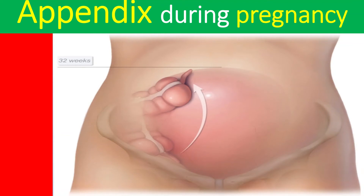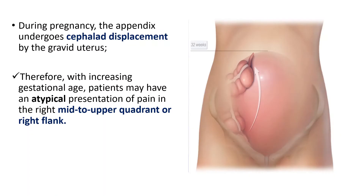In this session we are going to discuss appendix during pregnancy. During pregnancy, the appendix undergoes upward displacement by the gravid uterus. As you can see here, the natural position is in the right lower quadrant of the abdomen, but when the uterus progressively grows in size it also pushes the appendix and displaces it from its natural position.